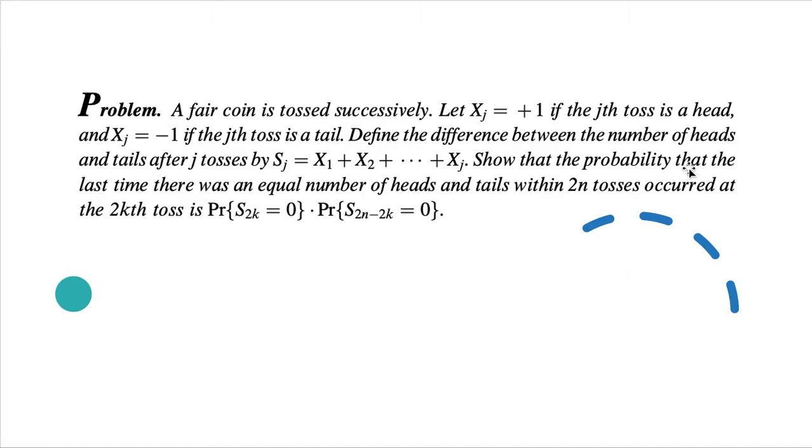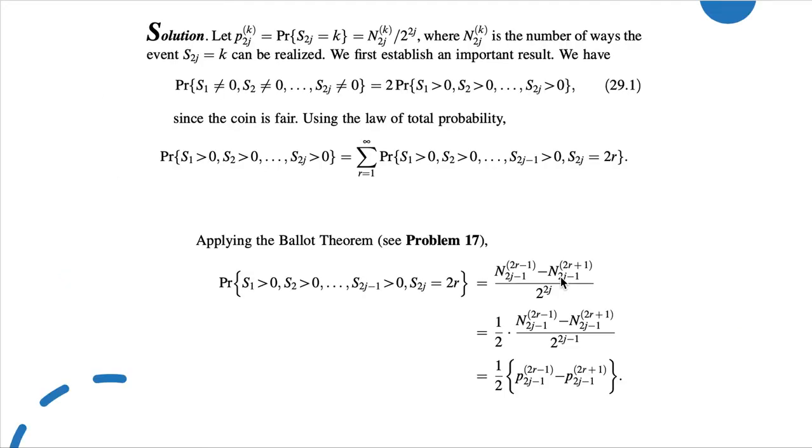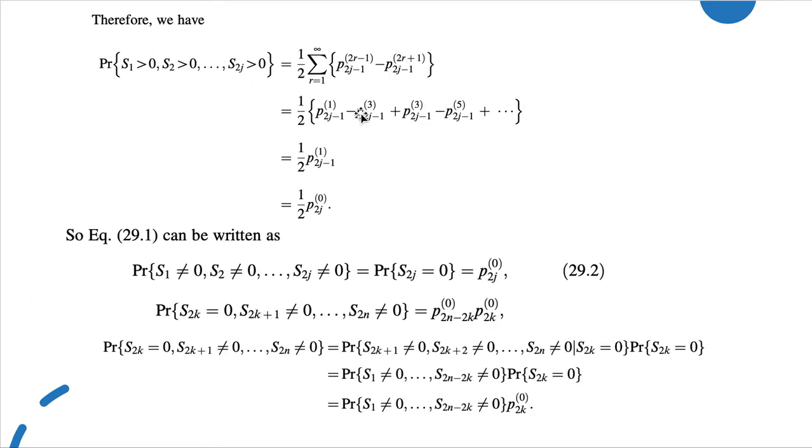Let's look at the solution of this problem. Here we can see that 2^(2j) is the number of ways the event S_2j = k can be realized. We first establish an important result here, and using the law of total probability, we get this. Then applying the Ballot theorem, we will get this result, which is 1/(2√(πj)).